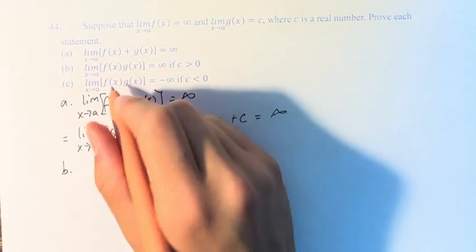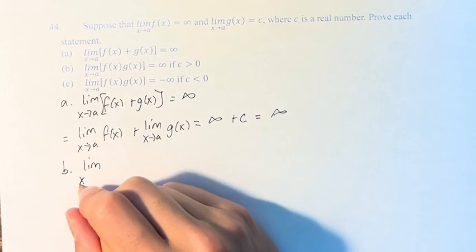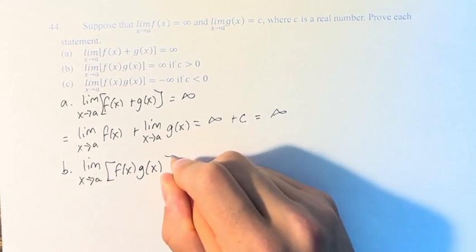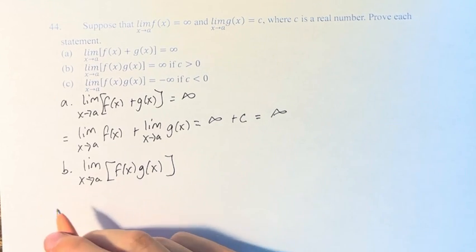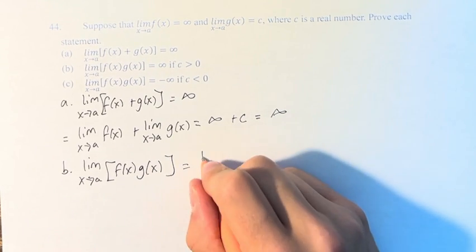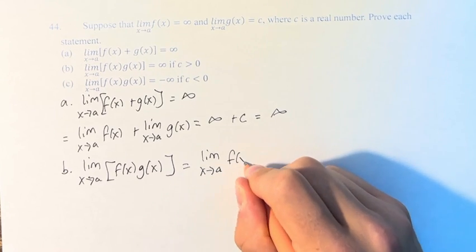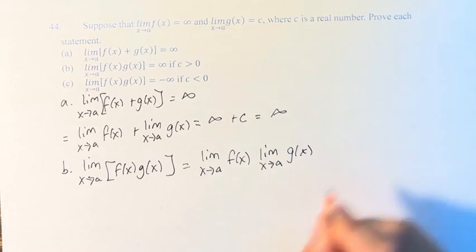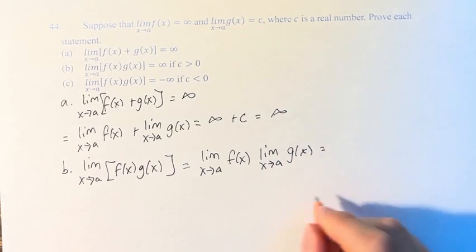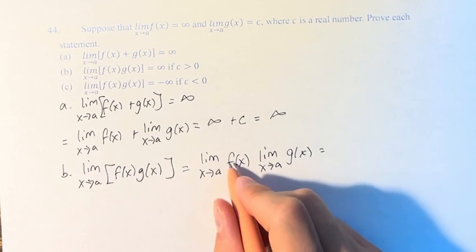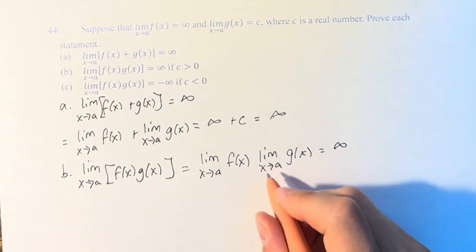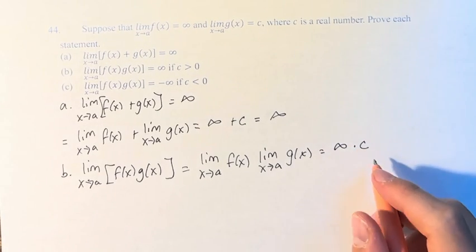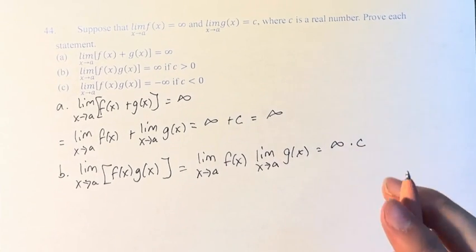In parts b and c, we have the limit as x approaches a of f of x times g of x. We know from the limit laws that this is equal to the limit as x approaches a of f of x, times the limit as x approaches a of g of x. Therefore, this equals the limit as x approaches a of f of x, which is infinity, times the limit as x approaches a of g of x, which is c. Therefore, this is infinity times c, which is infinity.